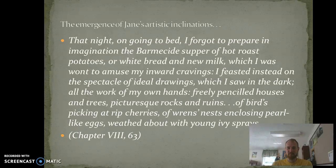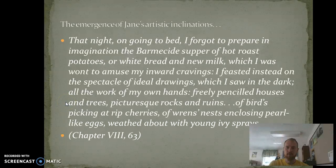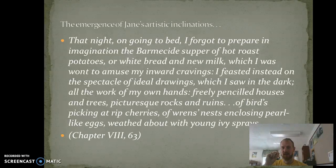There's a new craving emerging in Jane at this point in the novel. She says: 'I feasted instead' — figurative language, because you can't feast on something you can't eat — 'on the spectacle of ideal drawings, which I saw in the dark, all the work of mine own hands: freely penciled houses and trees, picturesque rocks and ruins, of birds picking at ripe cherries, of wren's nests enclosing pearl-like eggs, wreathed about with young ivy sprays.' She's describing ideal drawings she wants to create, thinking of these creations at night — there's a tremendous amount of vitality and hopefulness here.